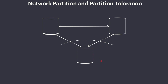We can still access the node in North America even though it couldn't talk to the other two nodes in Europe. This node is still functional, maybe with some compromise on consistency, and is still accessible — but we have two isolated networks, one in Europe and one in North America.